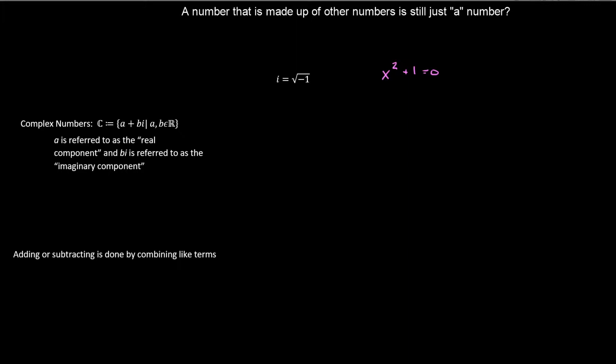Incidentally, Euler is also the one that gave us the number pi for the ratio of a circle's circumference to its diameter. Before that, they just referred to it as the ratio of a circle's circumference to its diameter. It's kind of an awkward way of doing it.